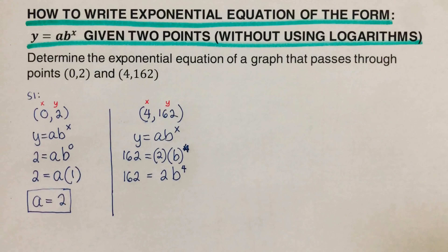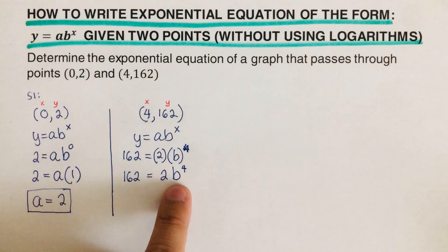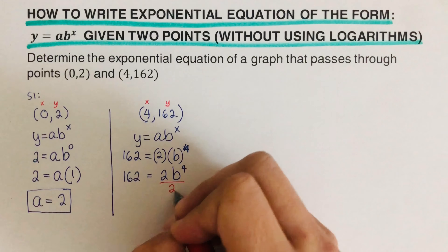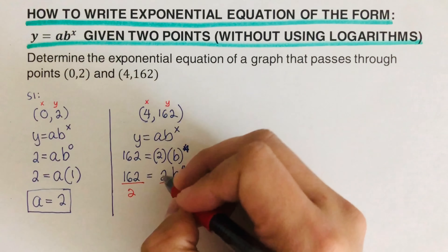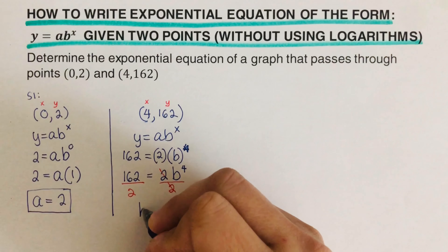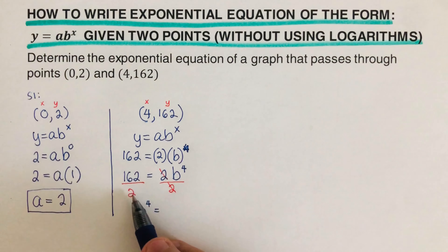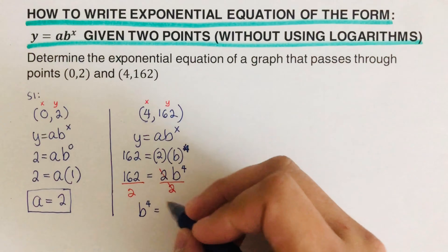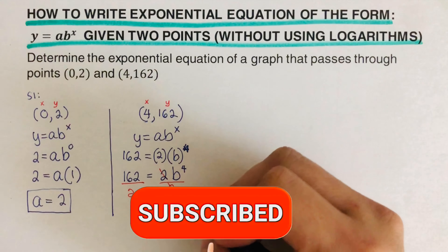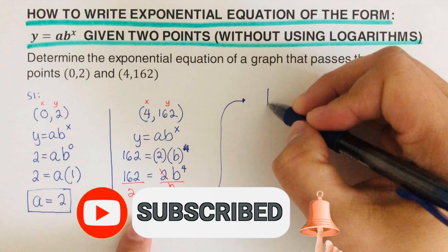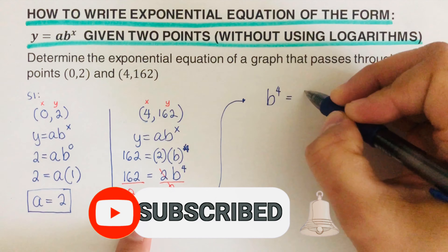We want to solve for b, so we divide both sides by 2. That gives us b to the fourth power equals 162 divided by 2, which is 81. So we have b raised to the power 4 equals 81.